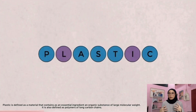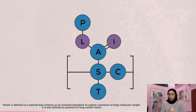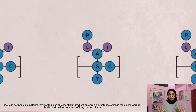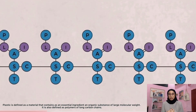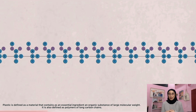Plastic is defined as a material that contains as an essential ingredient an organic substance of large molecular weight. It is also defined as polymers of long carbon chains.